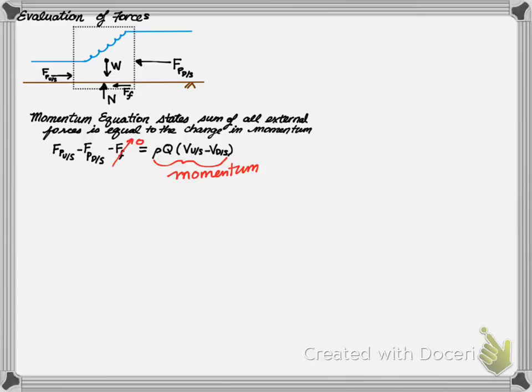It should be noted that the friction force is assumed to be 0 or negligible, because the length of a hydraulic jump is relatively short, and the effects of friction can be assumed to be 0.